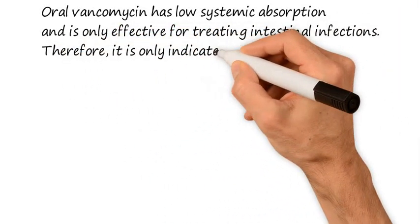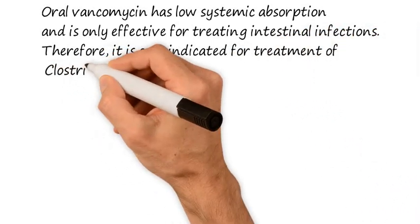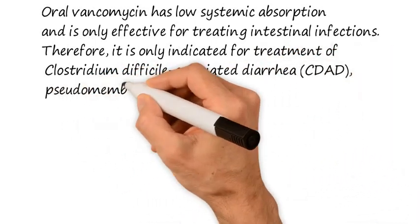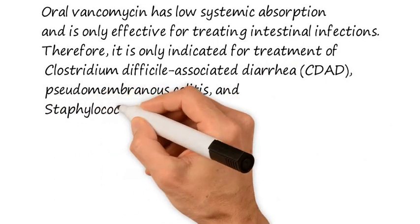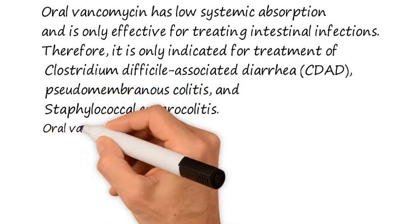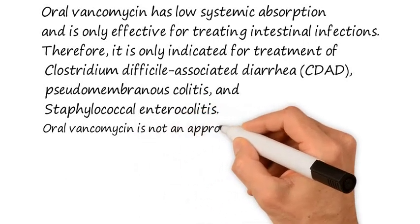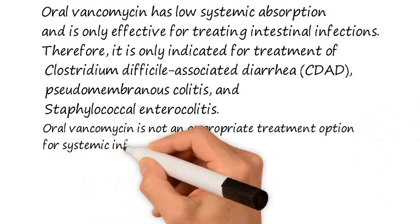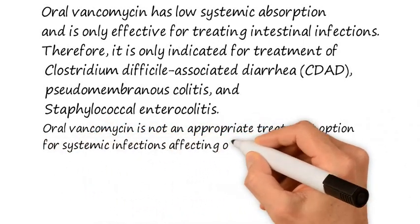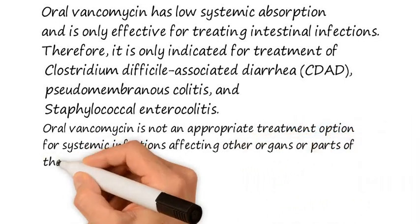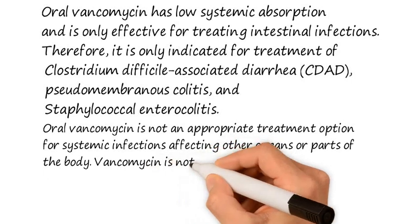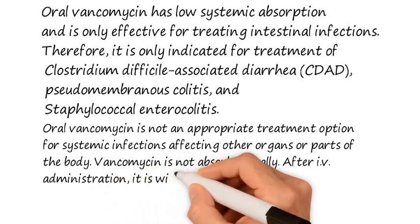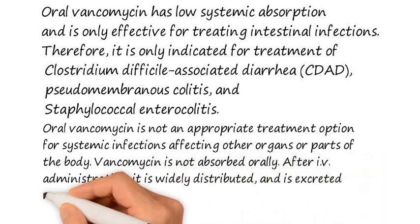Therefore, oral vancomycin is only indicated for treatment of Clostridium difficile-associated diarrhea (CDAD), pseudomembranous colitis, and staphylococcal enterocolitis. Oral vancomycin is not an appropriate treatment option for systemic infections affecting other organs or parts of the body. Vancomycin is not absorbed orally, so we give IV administration. It is widely distributed after IV administration and is excreted mainly unchanged in urine with a half-life of 6 hours.